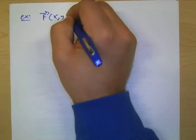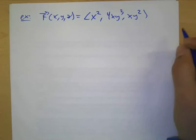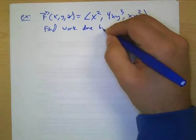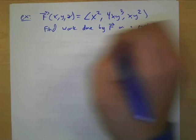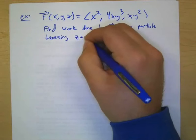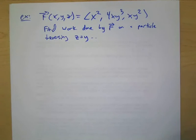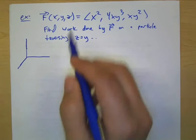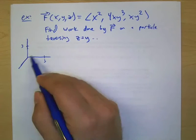Okay, so let's do an example. Let's say we have the vector field F of x, y, z equal to x squared, 4x, y cubed, and x, y squared. We want to find the work done by F on a particle traversing z equals y as shown.